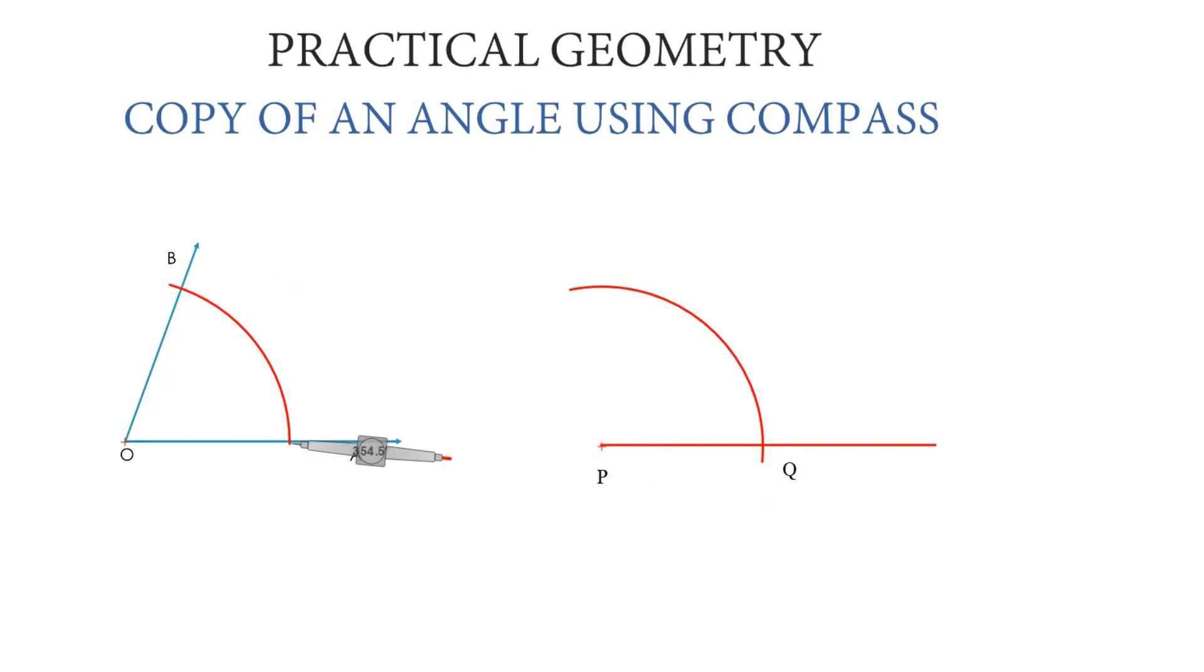Now measure the length of AB using the compass. Place the needle of the compass on point Q and draw an arc to cut the arc drawn in the previous step. Mark this point as R. Join P to R.